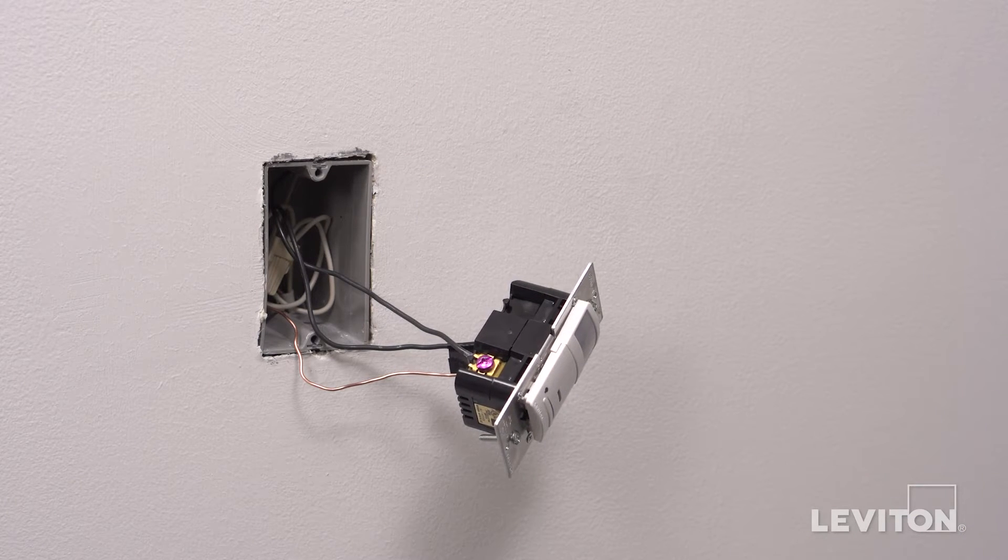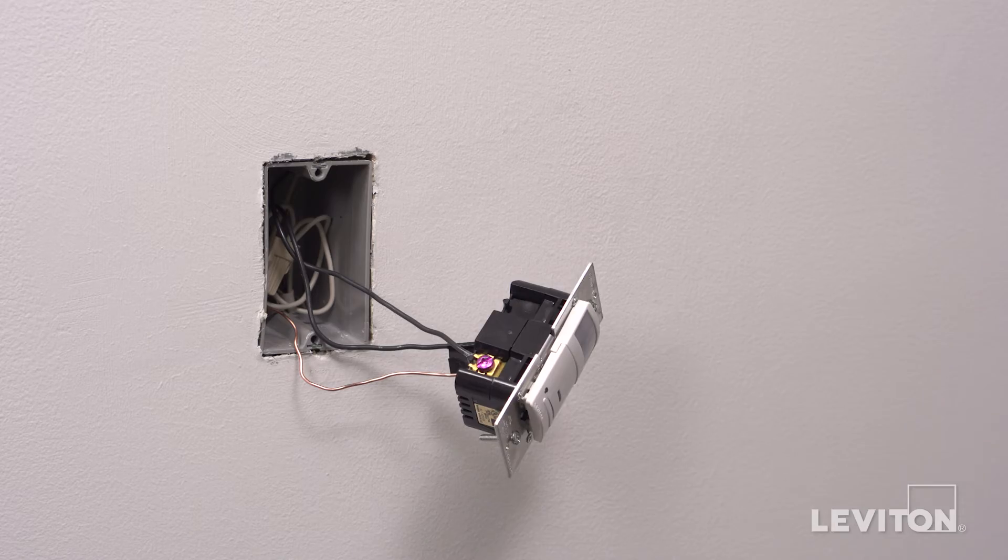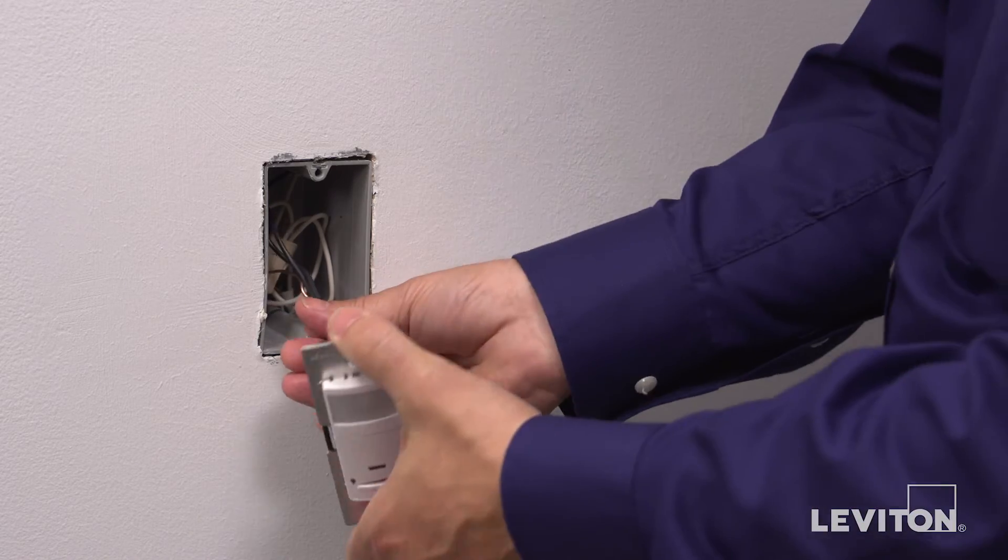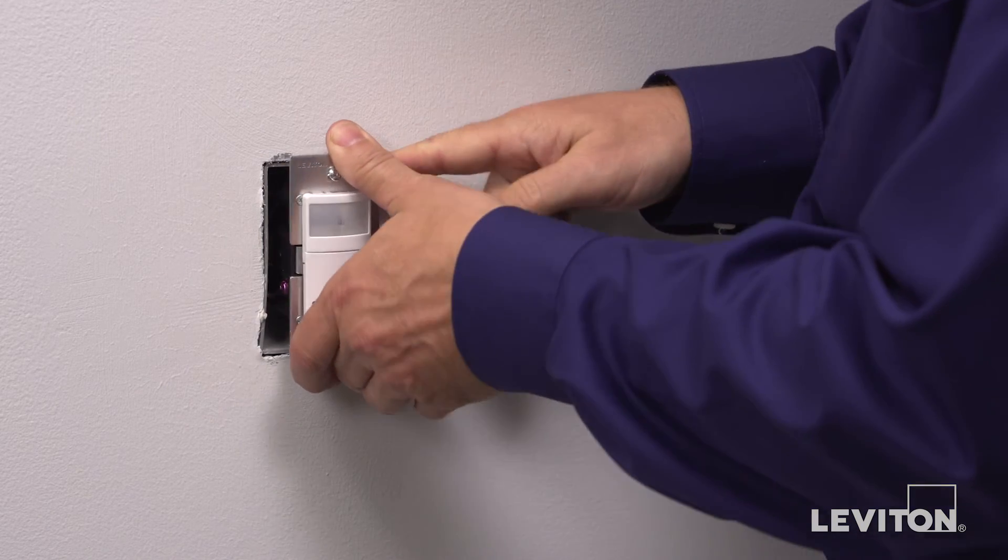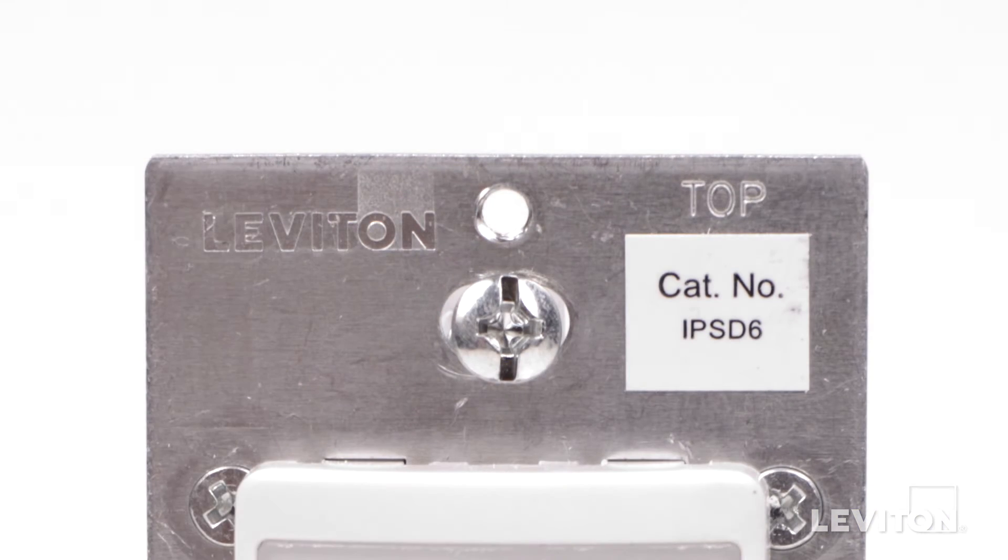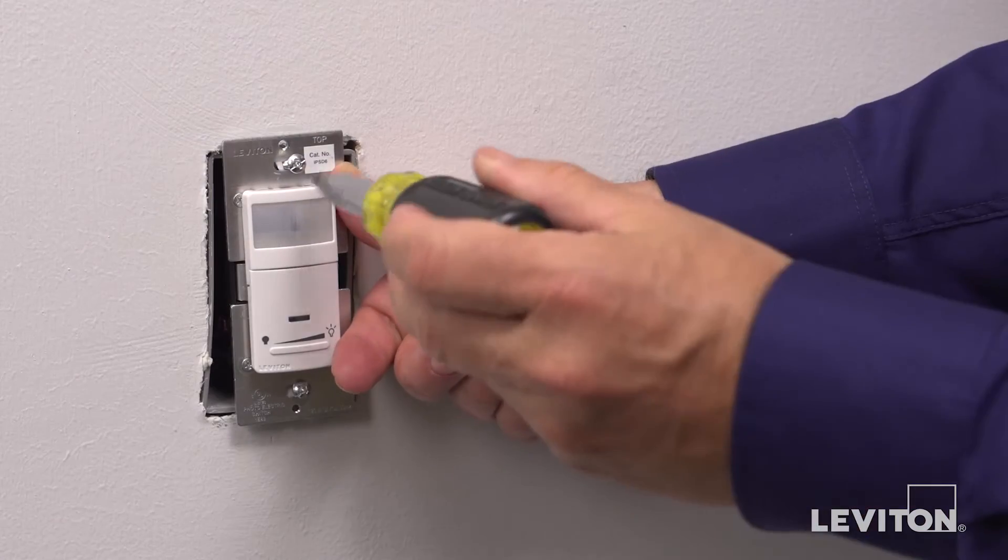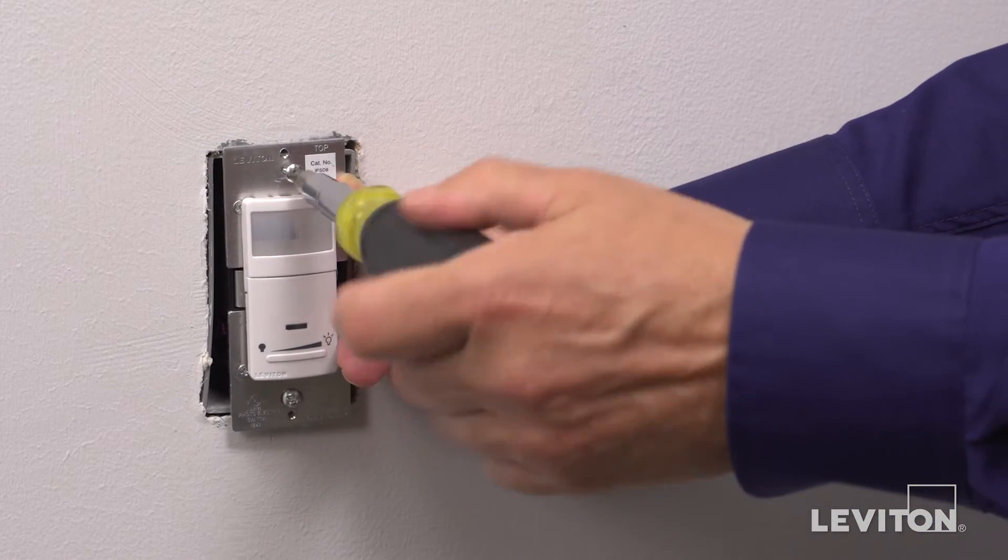Position all wires to provide room in the outlet wall box for the device. Ensure that the word top is facing up on the device. Partially screw in the mounting screws in the wall box mounting holes.